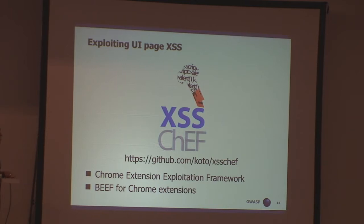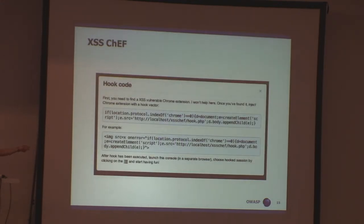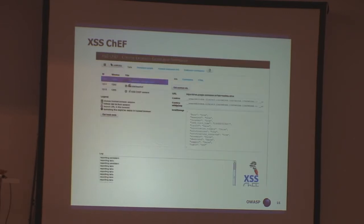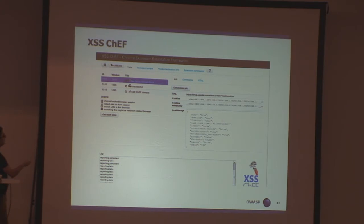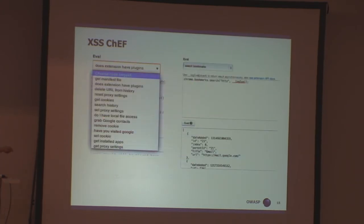I'm a tool guy, so I wrote a tool to exploit Chrome extensions — a Chrome extension exploitation framework, something like BeEF but for Chrome extensions. It gave you hook code: instead of an alert, you injected a small JavaScript snippet, and once it executed in the Chrome extension zone, it connected back to a server. You got a nice console where you could see all tabs the user had open, all cookies for the current domain or local storage, multiple payloads, get cookies for a particular domain, change proxy settings, grab Google contacts. Basically, you took over the user's browser.